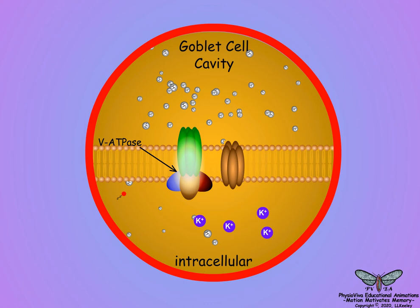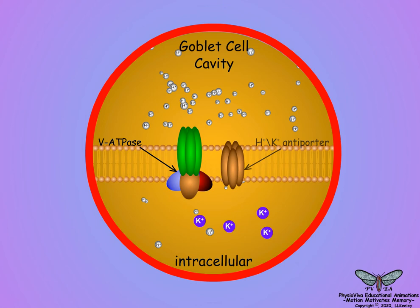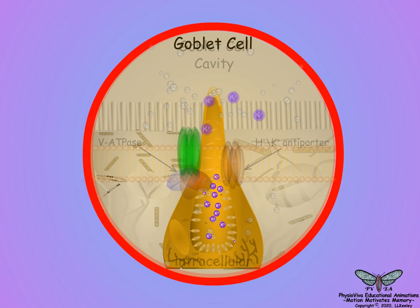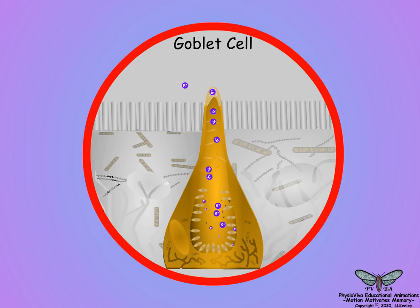The hydrogen ion electrochemical gradient then becomes the driving force for a goblet cell apical membrane hydrogen-potassium antiporter pump to exchange two hydrogen ions back into the goblet cell while moving one intracellular potassium ion into the goblet cell cavity. The potassium ions in the goblet cell cavity are released into the midgut lumen, making the lepidopteran midgut alkaline to as much as pH 11.